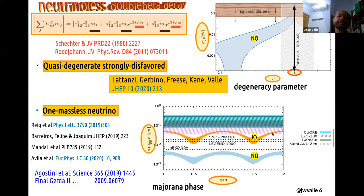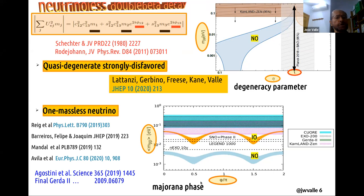I should say this is extremely interesting because this is for the first time in history that one is starting to probe the Majorana phase. I should just warn you that the KamLAND-Zen results here are used in their aggressive form concerning the nuclear matrix element assumed. So if you use a more conservative nuclear matrix element, then this hatched region gets smaller and moves up. But still, it is interesting and points to the future.